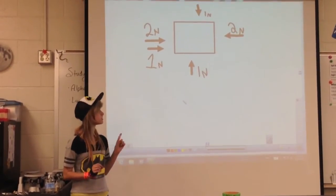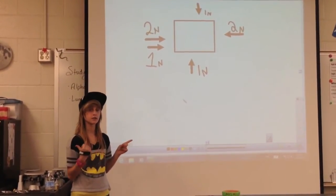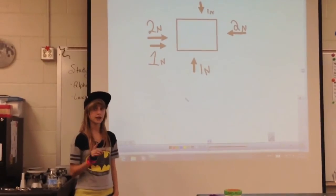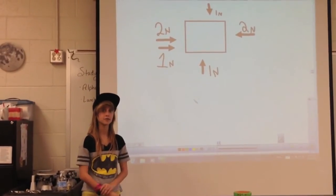But we still have three newtons acting to the right and two newtons acting to the left. So, again, you subtract the two from three to get one newton acting to the right.